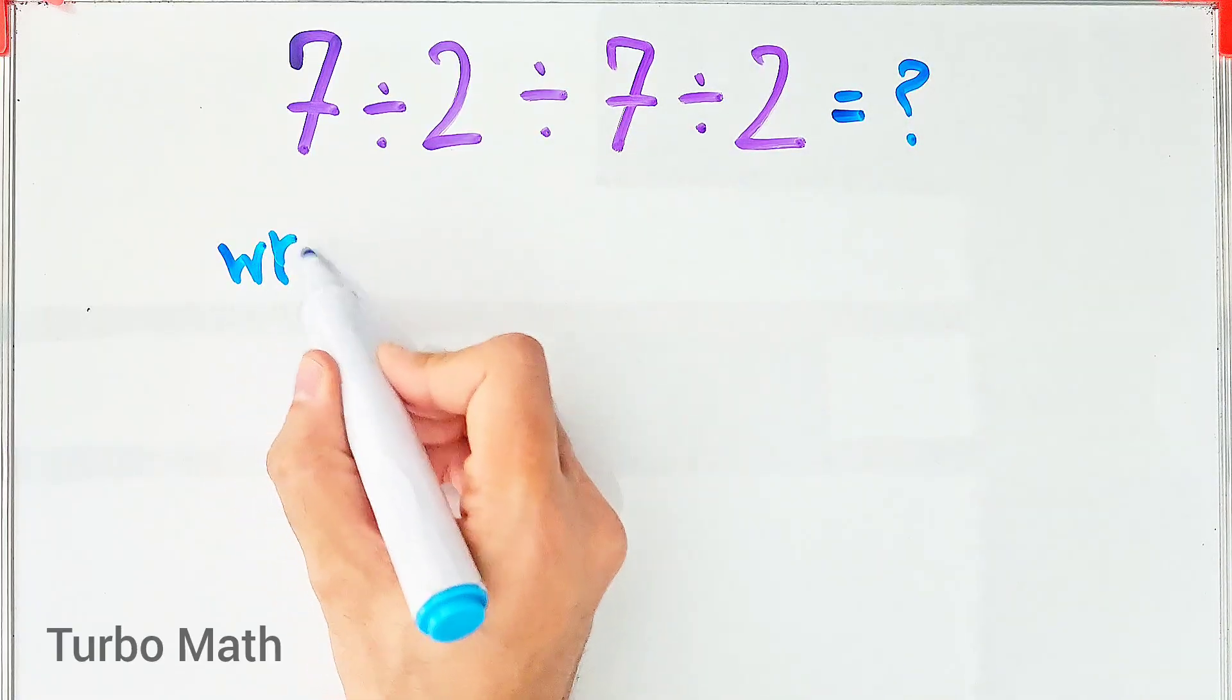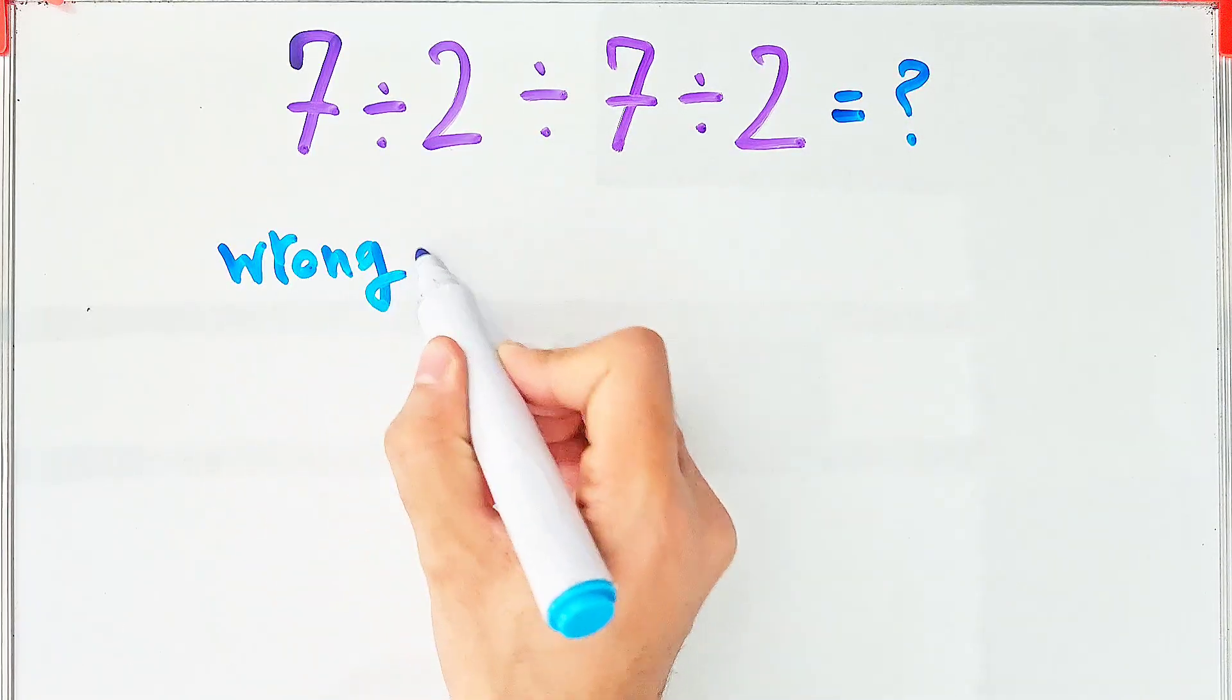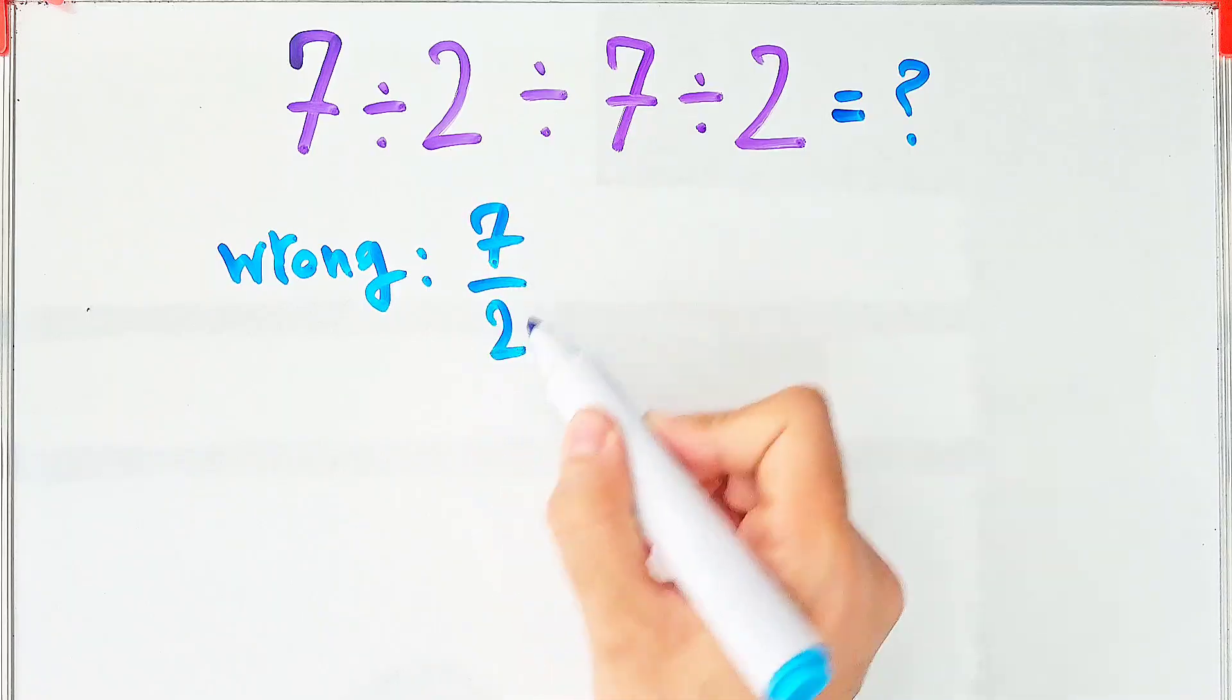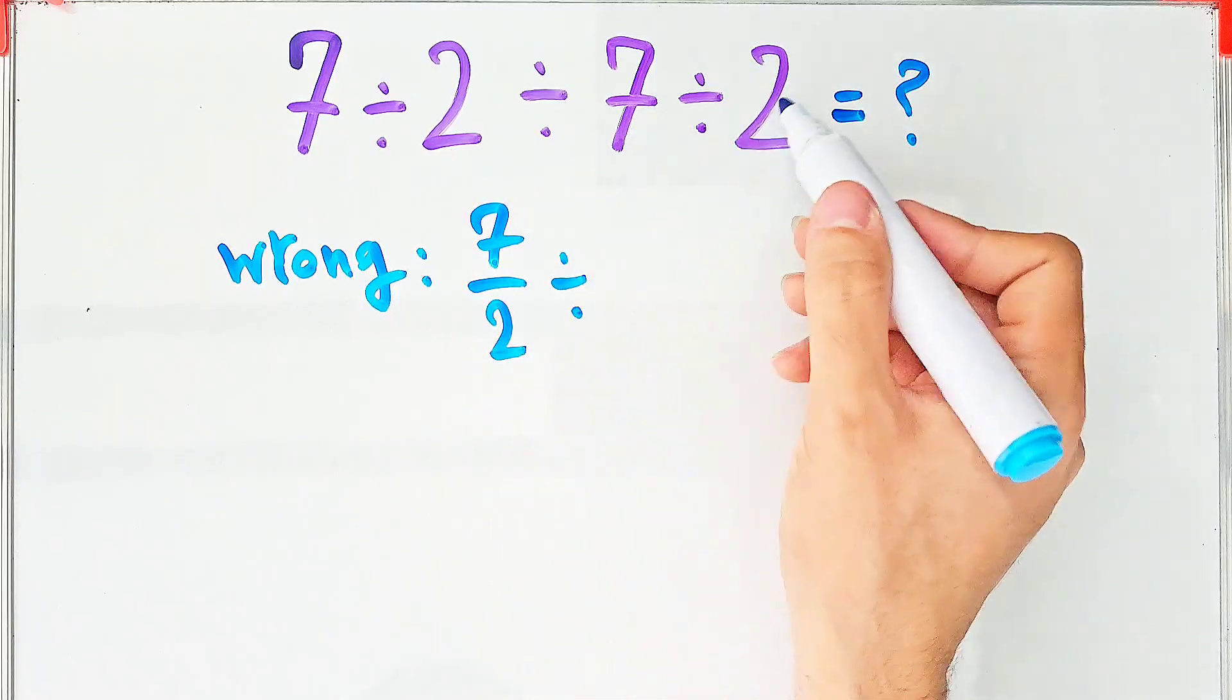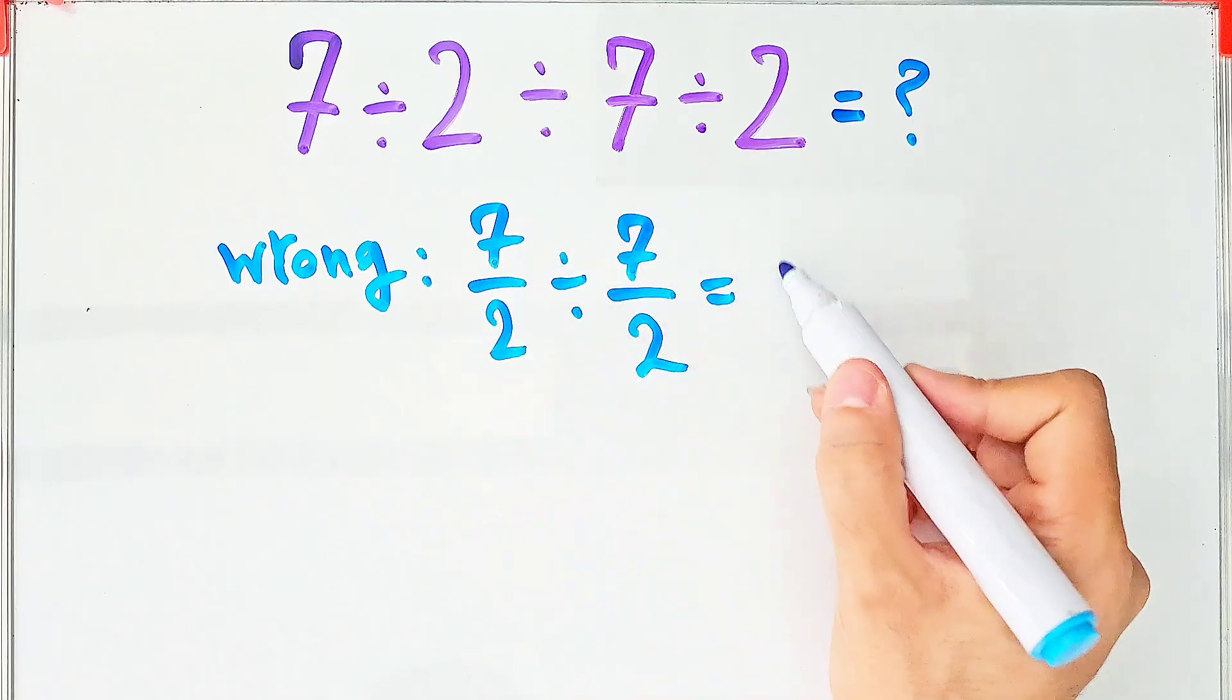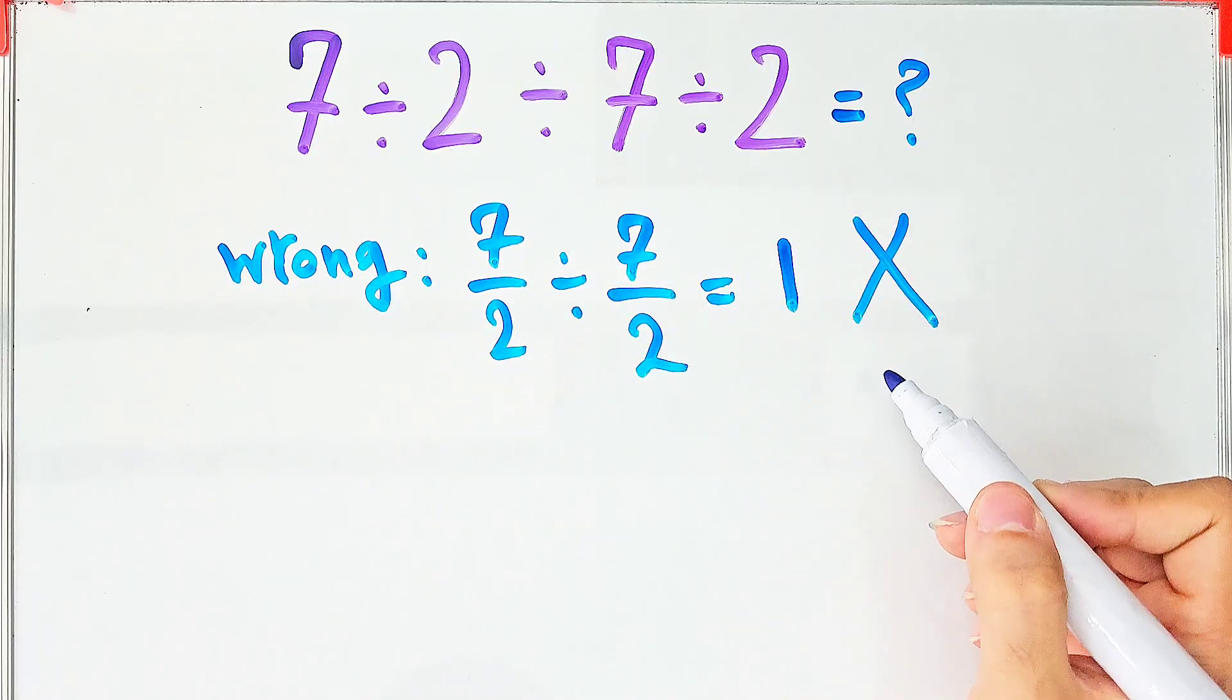In the wrong way of solving this question, some people first do this division. 7 divided by 2 equals 7 over 2, then divided by this division that equals 7 over 2, and finally they say the answer is 1, but it's definitely wrong.